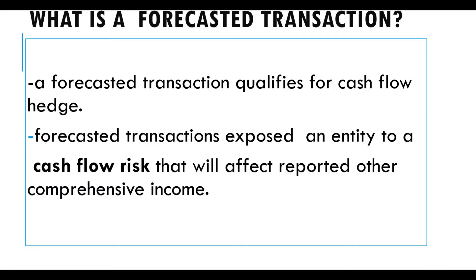A forecasted transaction qualifies for a cash flow hedge because the entity is exposed to a cash flow risk that will affect reported other comprehensive income. Remember that the difference between a fair value hedge and a cash flow hedge is that in a fair value hedge, changes in fair value of the derivative are taken into profit or loss. However, in a cash flow hedge, changes in the value of the derivative shall be taken into other comprehensive income.